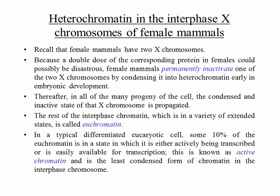This inactivation is done using heterochromatin — the condensed, inactive state of the X chromosome is propagated in all progeny of the cell. A really obvious example of this is calico-colored cats. The rest of the interphase chromatin is referred to as euchromatin — 'eu' meaning proper chromatin. In a typical differentiated eukaryotic cell, about 10% of the euchromatin is actively being transcribed or easily available for transcription; this is known as active chromatin.